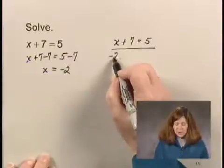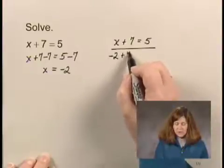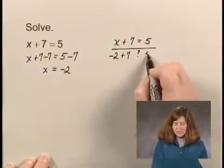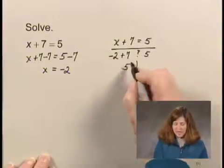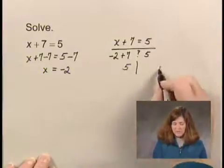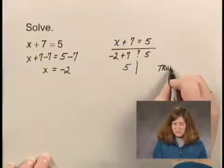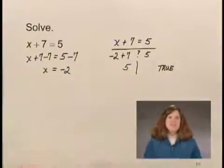Substituting negative 2 for x gives us negative 2 plus 7. Does that equal 5? Well, since negative 2 plus 7 is 5, 5 equals 5 is true. And negative 2 is the solution.